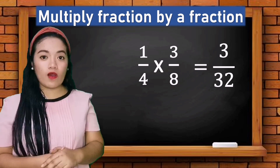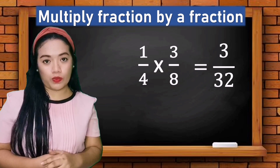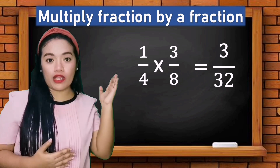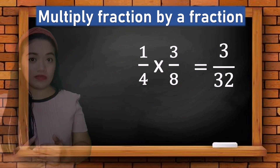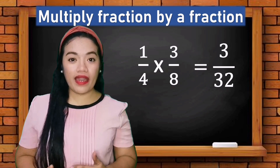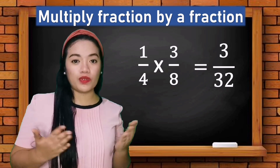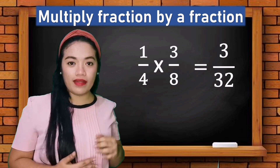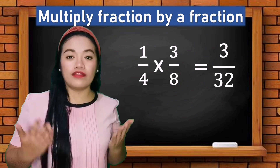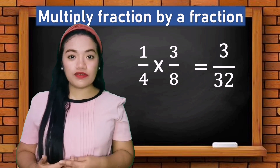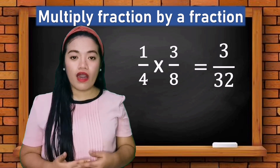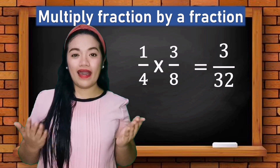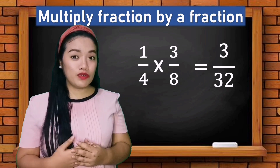Now observe our answer, which is three over thirty-two. Is there any common factor between our numerator and denominator? That's right — there are no common factors, therefore the final answer is three over thirty-two.